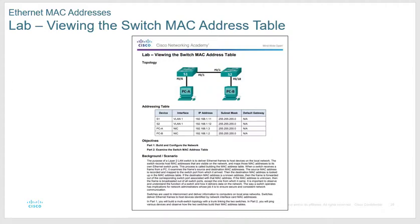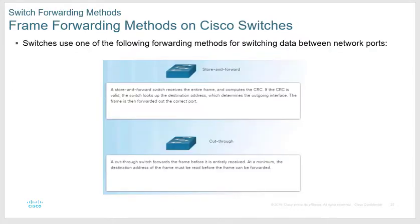Switches have two methods to forward packets. The first is cut-through: as the packet is entering the switch, the switch immediately looks for the destination MAC address and as soon as it sees it, makes a forwarding decision — if it's in the table, send it out that port; if not, flood all other ports.